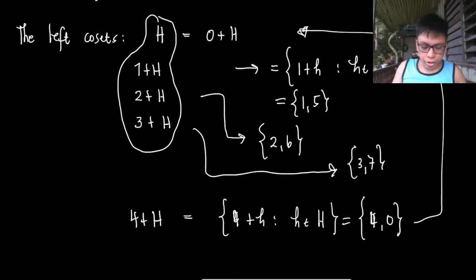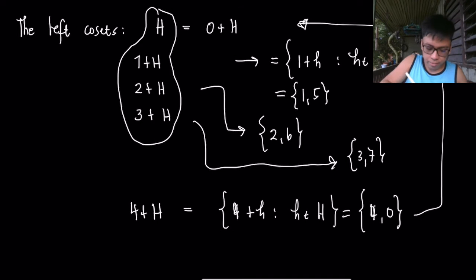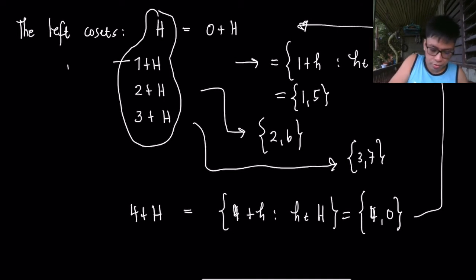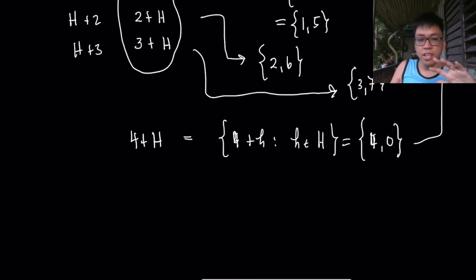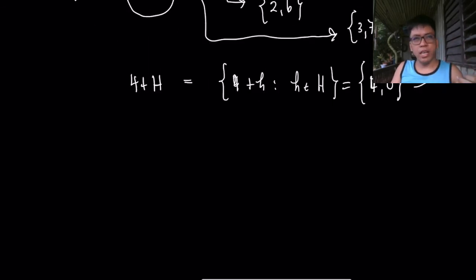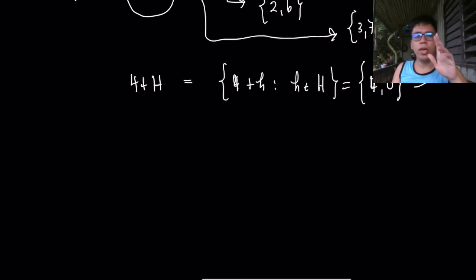Notice here that 1 + H is the same as H + 1, 2 + H is the same as H + 2, and 3 + H is the same as H + 3. However, in general, the right coset is not necessarily always equal to the left coset — especially when we are dealing with multiplications of matrices, where there is no commutativity.